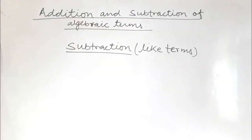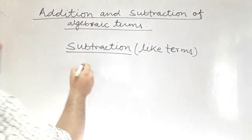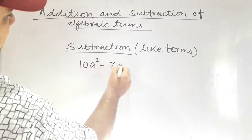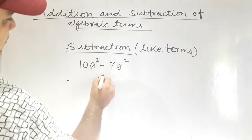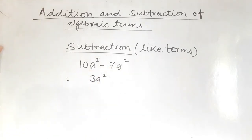While adding like terms, we added the coefficients. Likewise, when we subtract like terms, we should subtract their coefficients. For example, 10a squared minus 7a squared: the base and power remain the same, 10 minus 7 equals 3, so the result is 3a squared. We shall never subtract the base or power — we shall only subtract the coefficient.